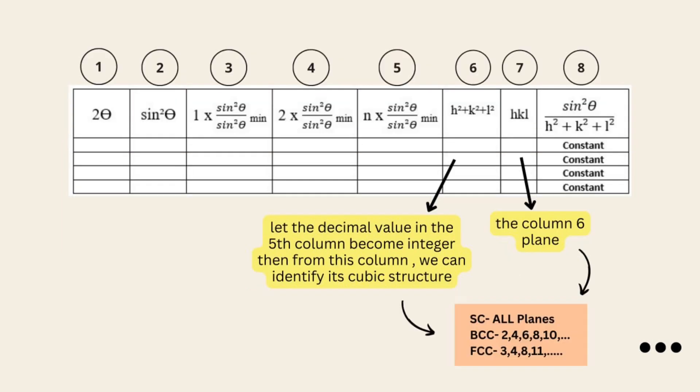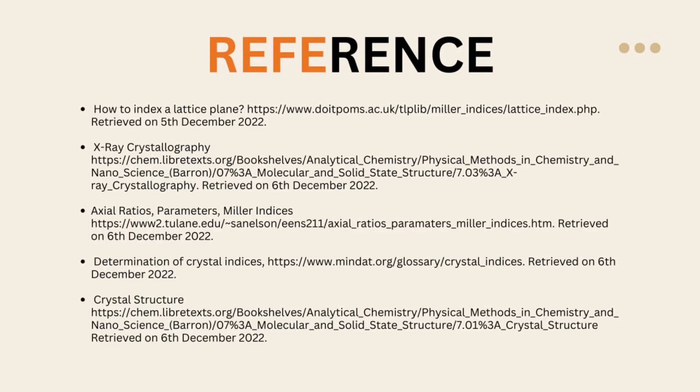Finally, compute the constant by multiplying sin squared theta by h squared plus k squared plus l squared. The 8-column entry needs to be identical so that the entire process is validated. That's all from us.